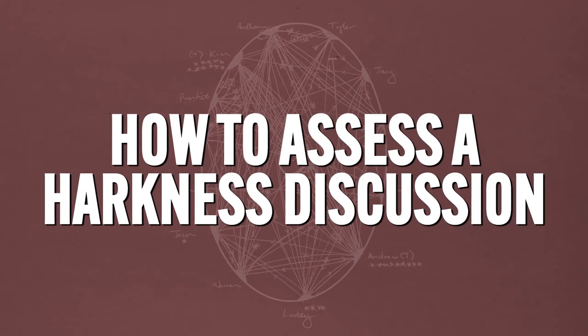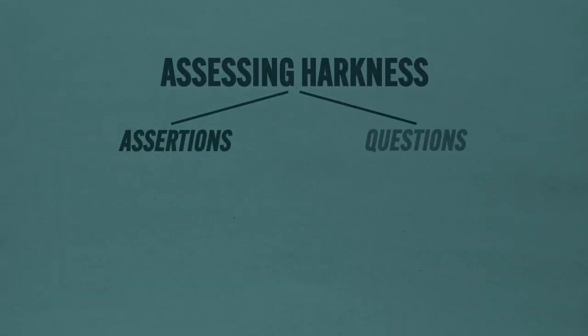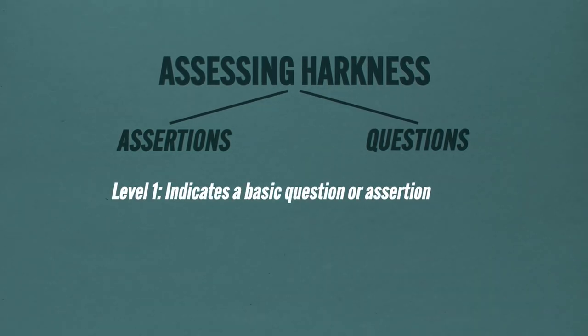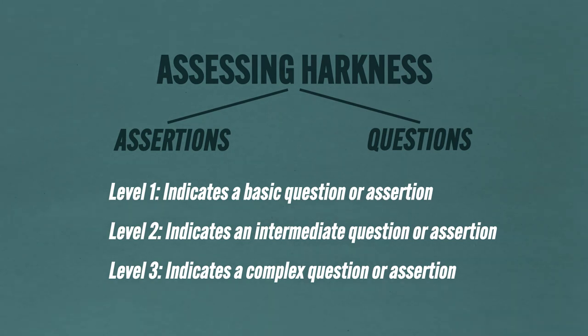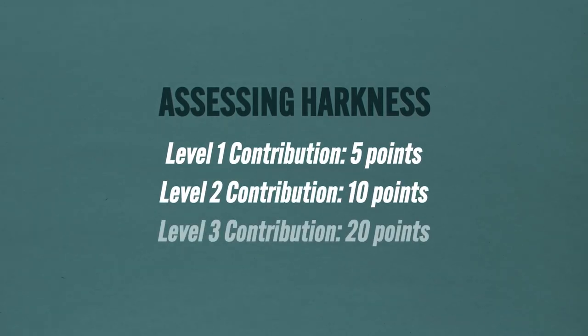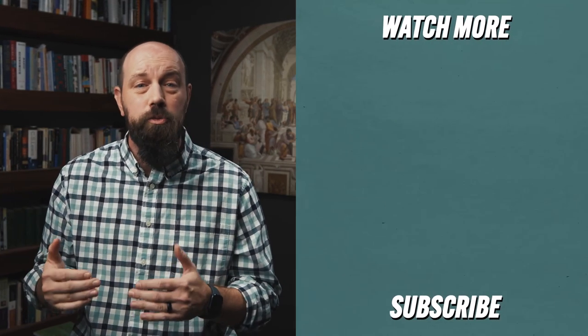How do you assess a Harkness discussion? I've seen as many ways to do this as there are teachers, but here's how I do it. I write everybody's name on a piece of paper, and they have a rubric in front of them showing the kind of contributions I'm looking for. There are two kinds of contributions that score points: assertions and questions. There are three levels under each, roughly corresponding to Bloom's taxonomy. Level one is a basic question or assertion, level two is intermediate, and level three is complex. Level one makes me go 'good,' level two makes me go 'interesting,' and level three makes me go 'hot.' Every student gets a 60% just for showing up; each level one contribution is worth five points, each level two is worth ten, and each level three is worth twenty points. As the discussion goes on, I write below their names the levels of their contributions, and in the end they have their score.